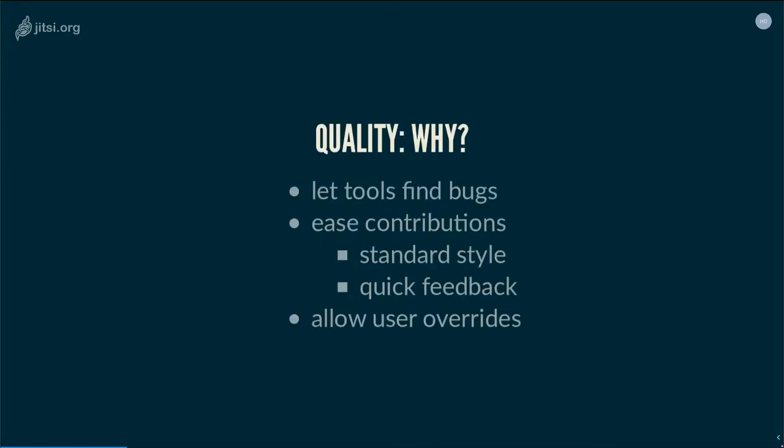Why is quality important? Quality lets tools find bugs for you. They will highlight problems, and unit tests will make sure that your code is doing what it's supposed to do. Quality also helps contributions — if the code is easy to read, easy to understand, and easy to modify, it will help contributors of your project. Having a standard style that everyone understands is good. Having quality tools in place will also improve the feedback loop, so your contributors can get quick feedback on their requests and modify them immediately without you having to review first, which can take days.